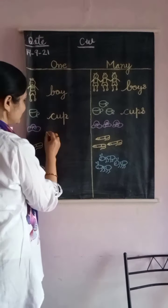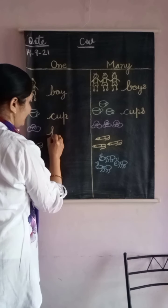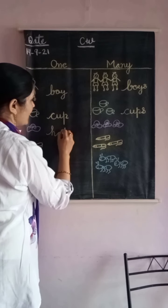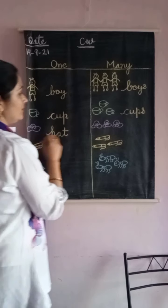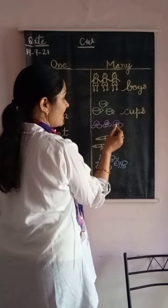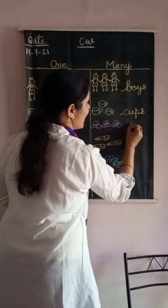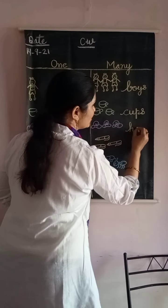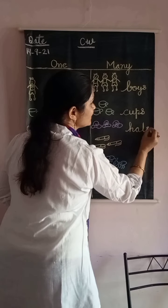Now, hat. What is this? Hat — H, A, T — hat. Now see, there are many hats, so we will put S: H, A, T, S — hats.